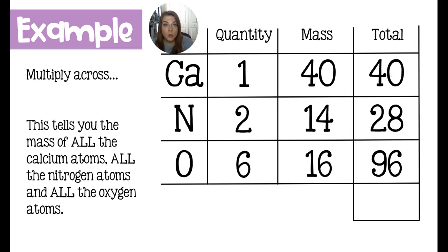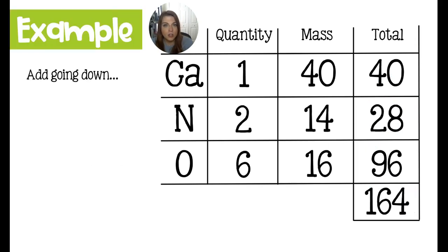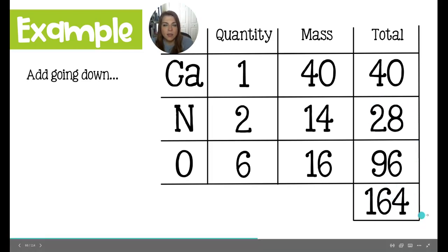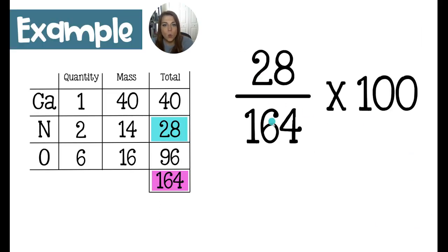Then we're going to add them going down the table to find the mass of calcium nitrate, which comes out to 164 grams. We wanted to find the percent by mass of nitrogen in calcium nitrate. So we take the 28 and divide it by 164, multiply by 100 to turn it into a percent, and we get 17%. That is how you do a percent by mass problem.